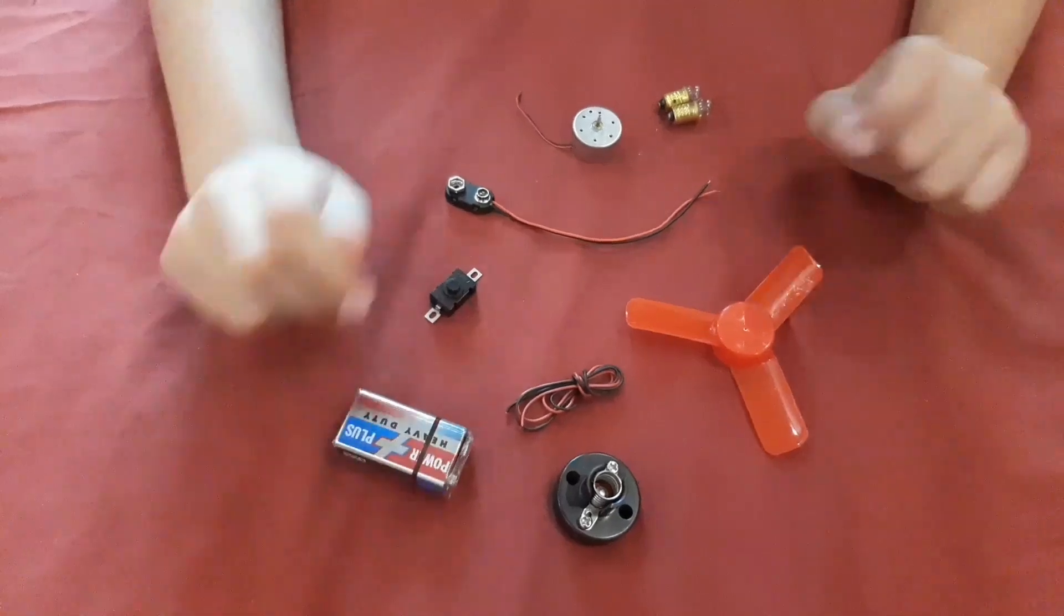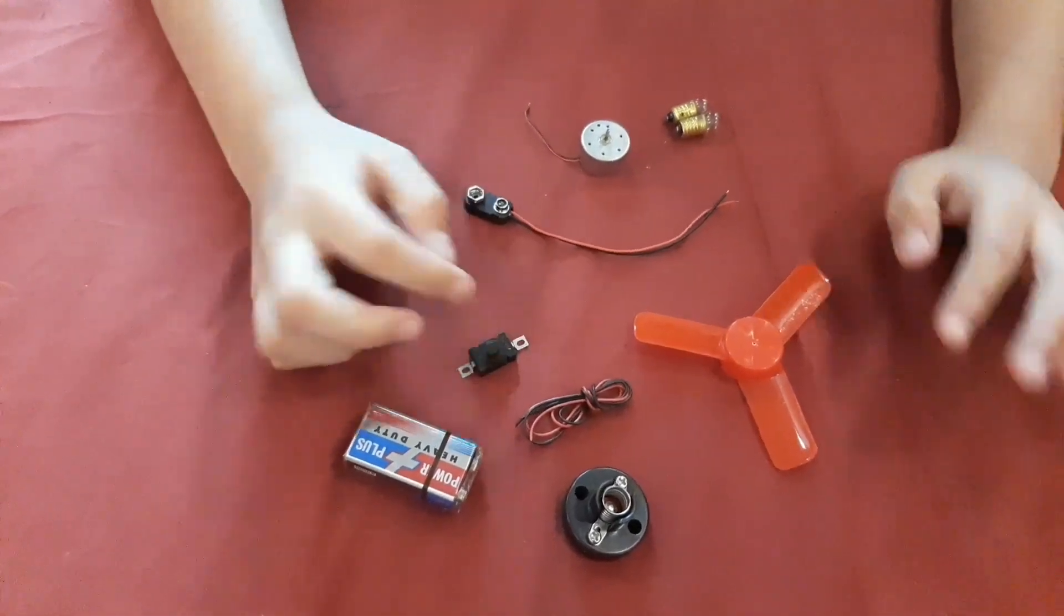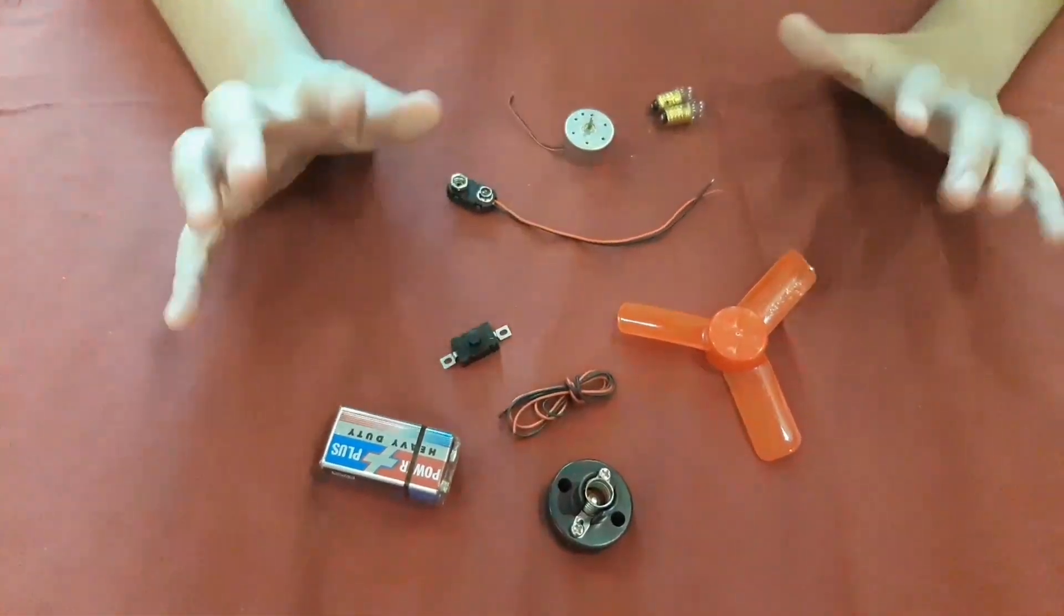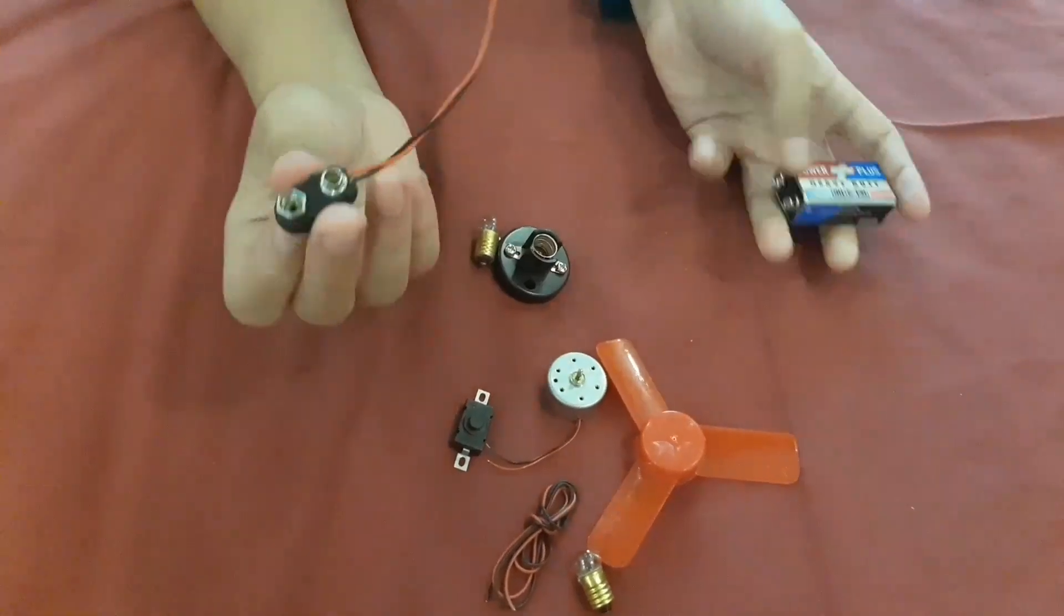And this little button that if you press, the fan will start spinning and the light bulb will light up. So let's do this. Now take your platform for the nine volt battery.